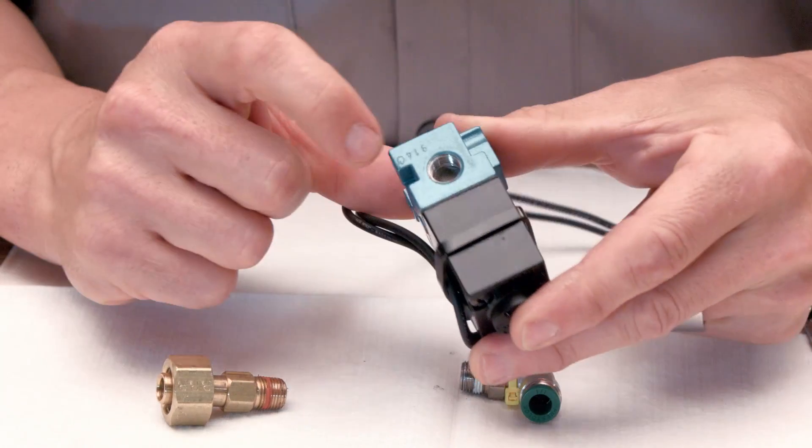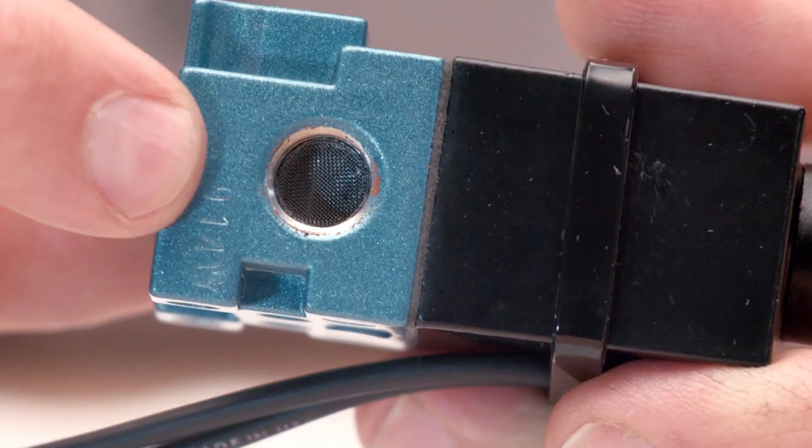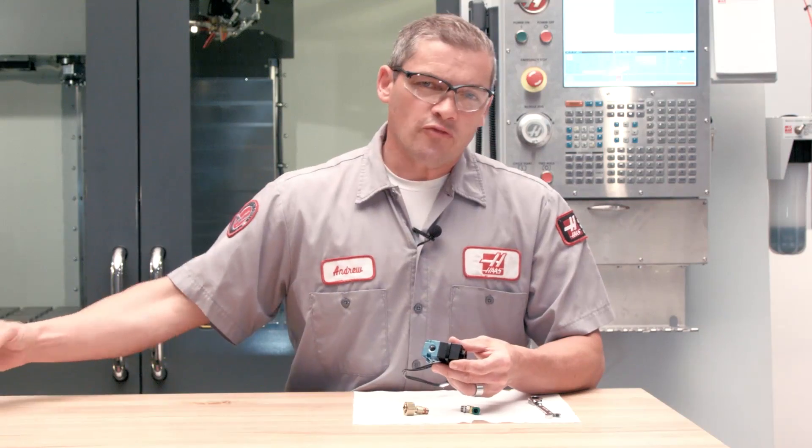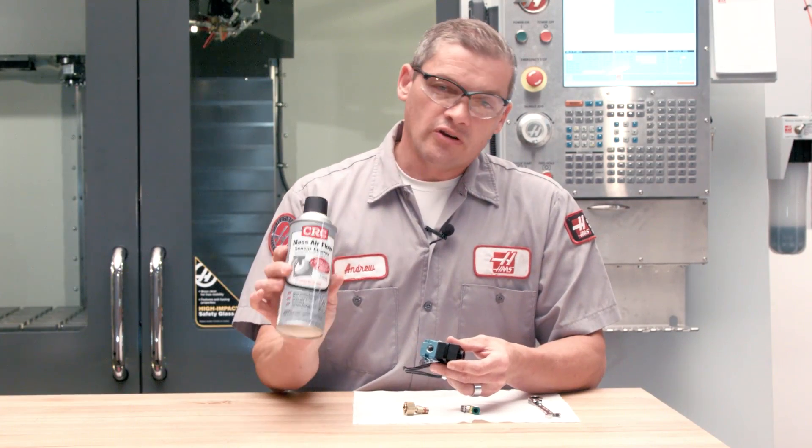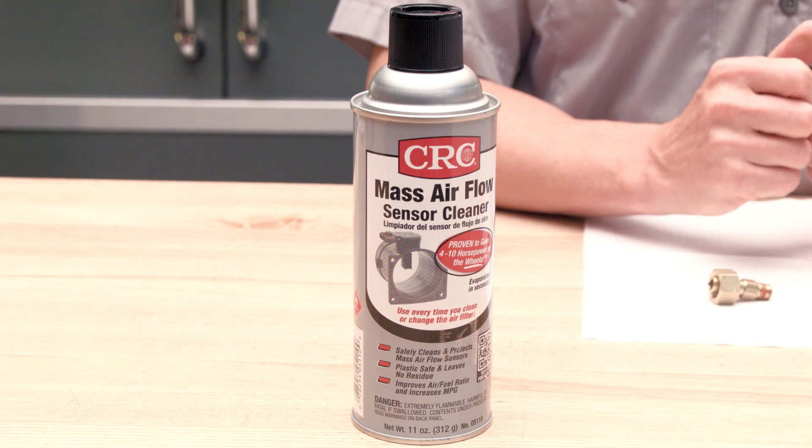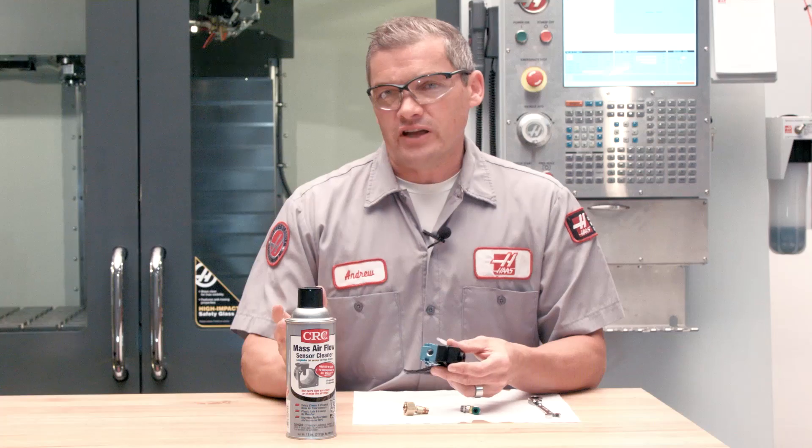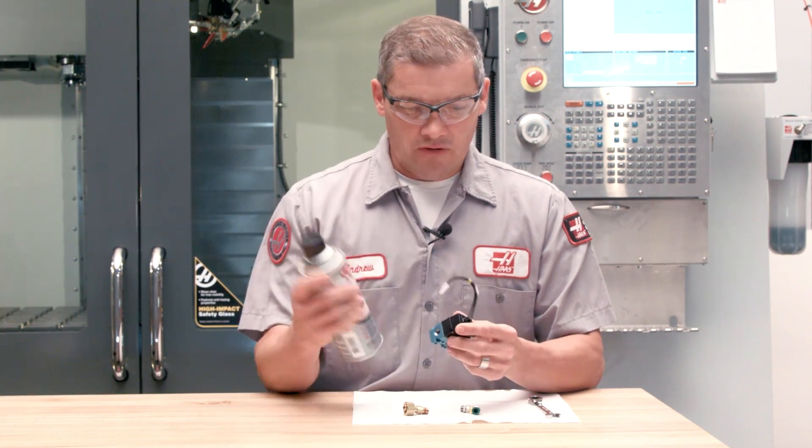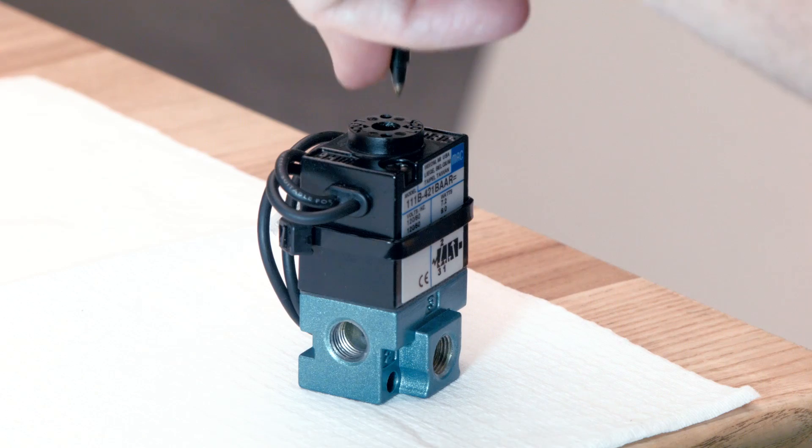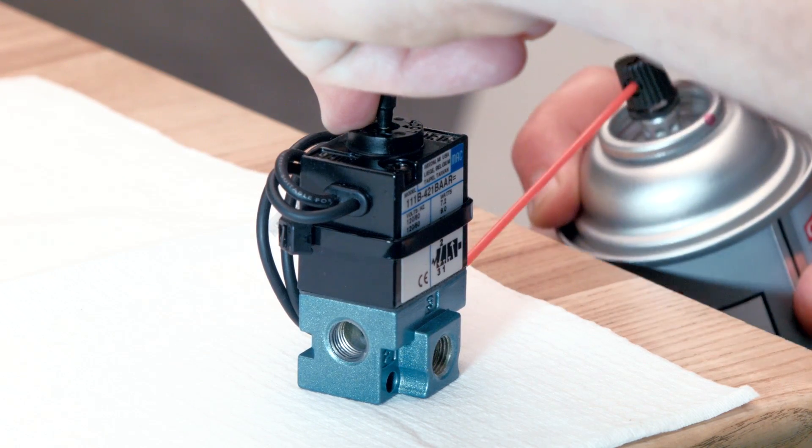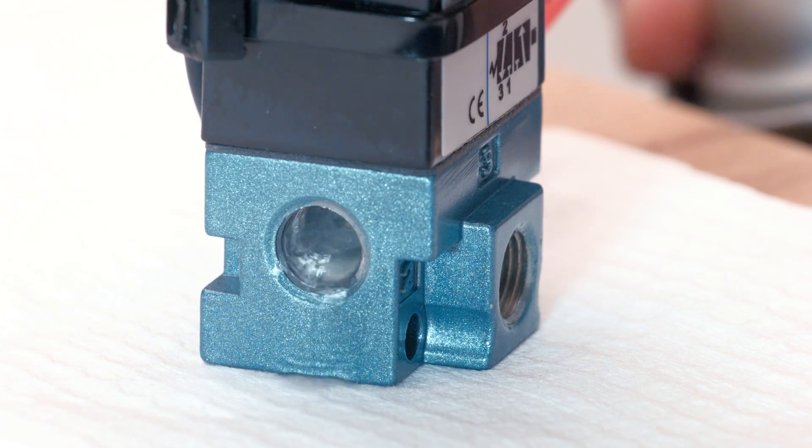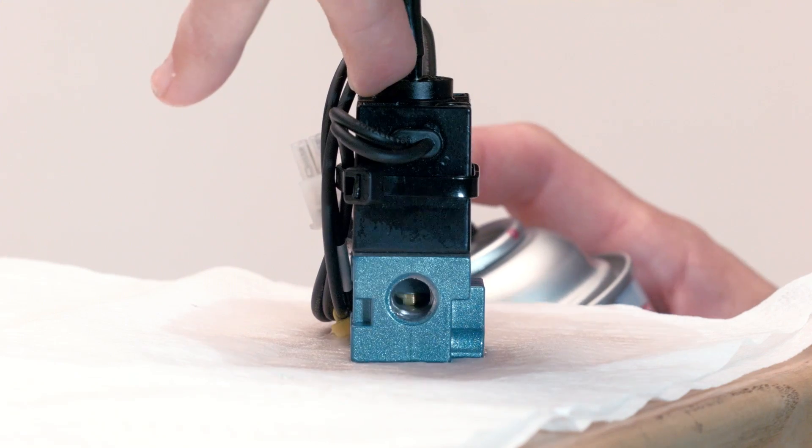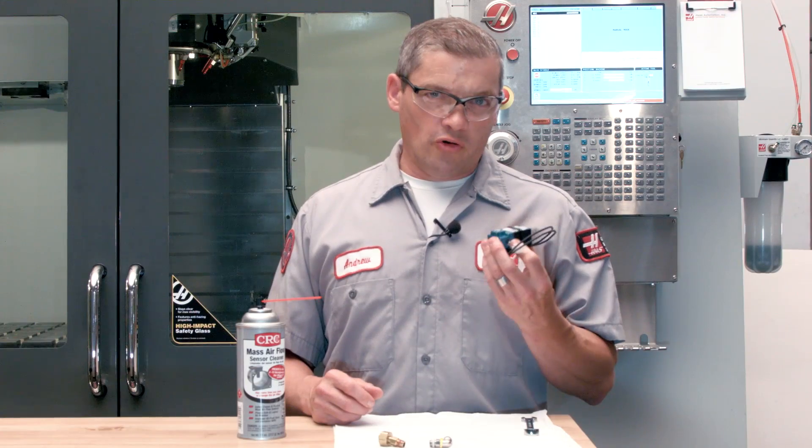With the fittings removed, you want to take a close look at your inlet filter right here. You don't want to see any particles here. If you do, remove them carefully. The best substance we've found for cleaning out solenoids is mass airflow sensor cleaner. It's available at auto parts stores everywhere. And it doesn't contain the kind of solvents that are going to damage the seals inside the solenoid. Now we're going to use this stuff to clean the solenoid out while we're depressing the manual activation button on the top of the solenoid. You can also actuate the valve up and down manually so that you clean all the moving parts inside.